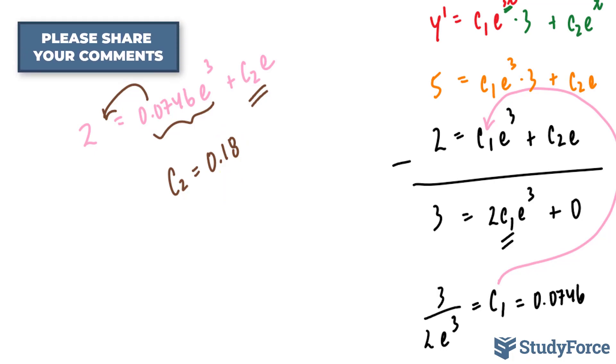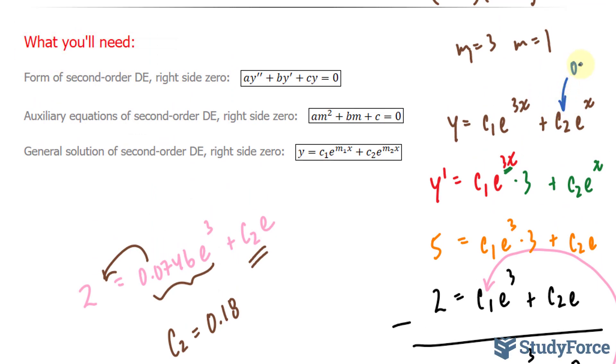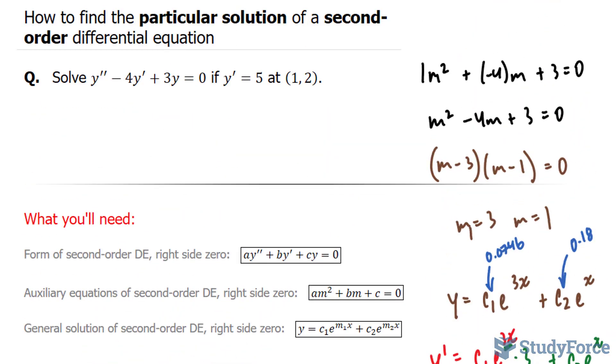We're almost there. The last thing we have to do is take these two numbers and place them into the general solution. So for here, I'll put 0.18 which is the number I found and over here I'll put 0.0746. And there you have it. This represents the particular solution to the second order differential equation.